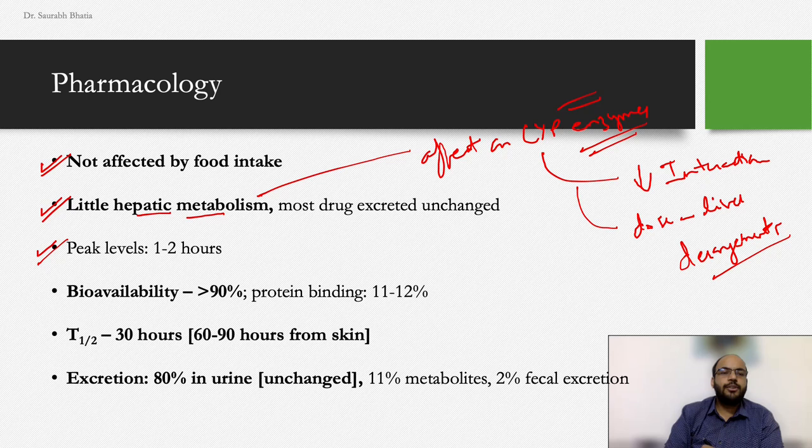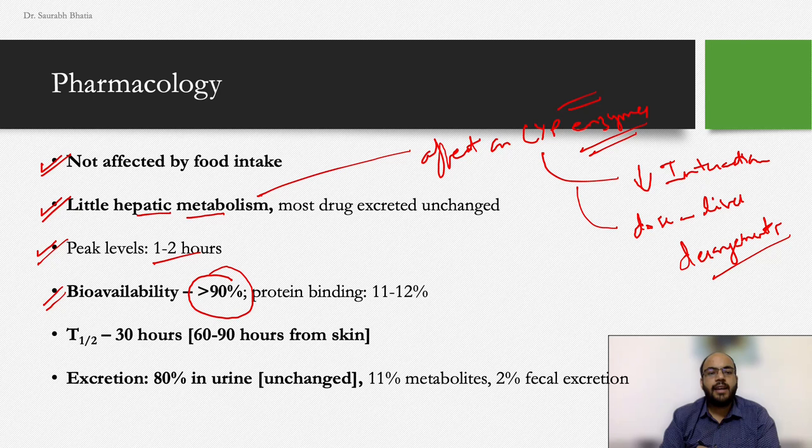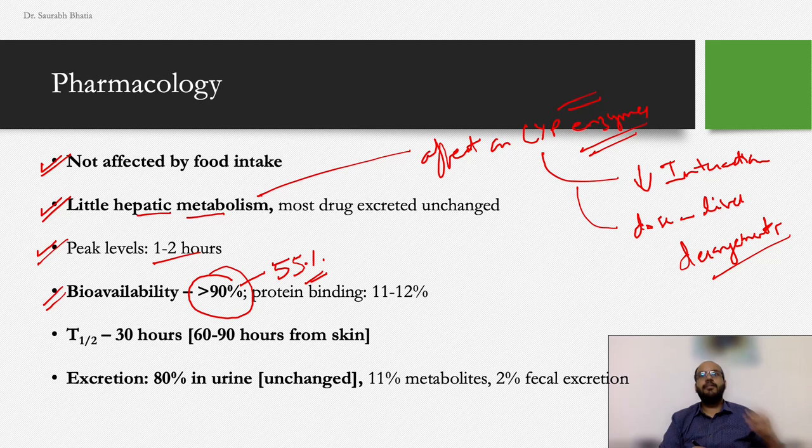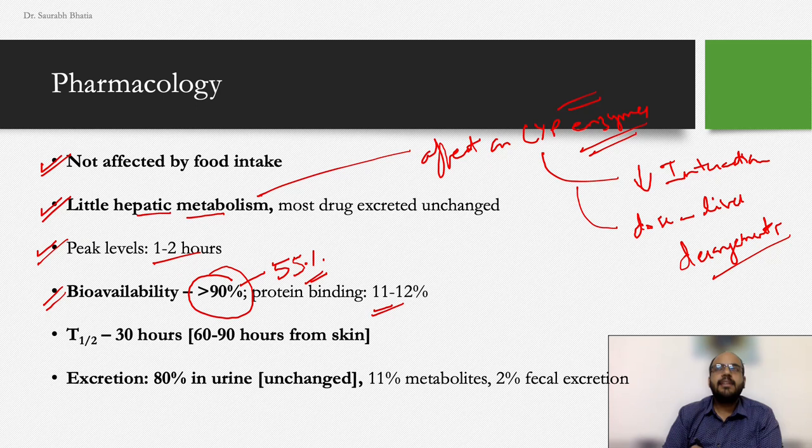Peak levels are reached in one to two hours. Bioavailability is more than 90%, which is one of the highest among azoles — for comparison, itraconazole's bioavailability is maximum around 55%. Protein binding is only 11–12%, so a large amount of free drug circulates.